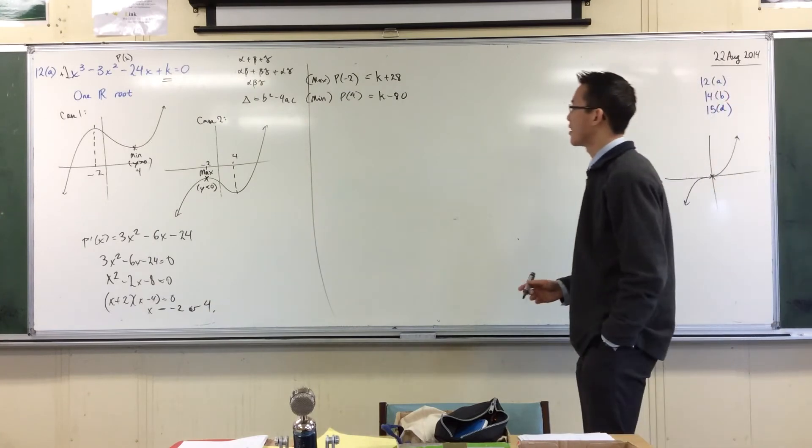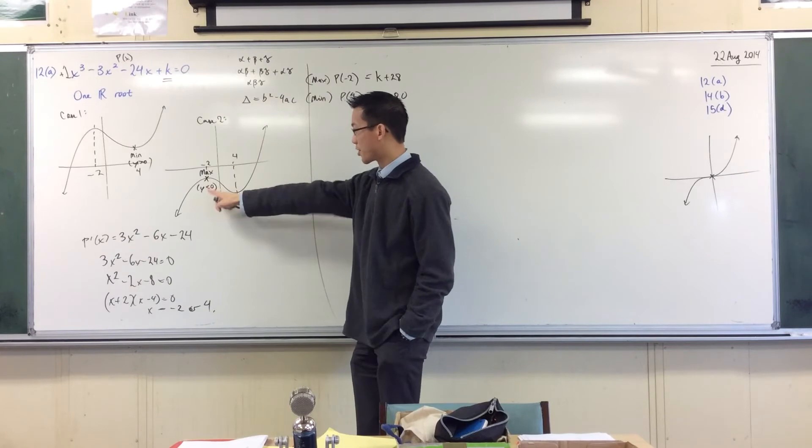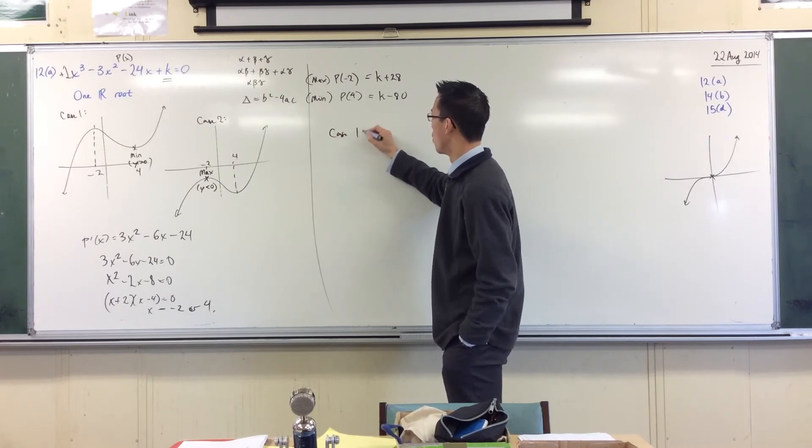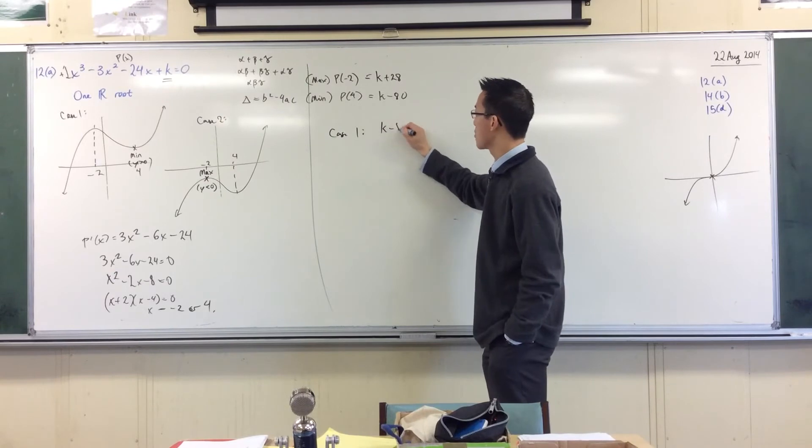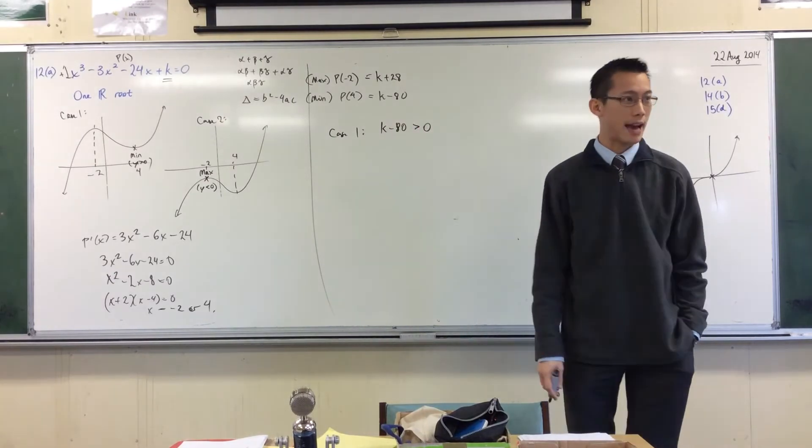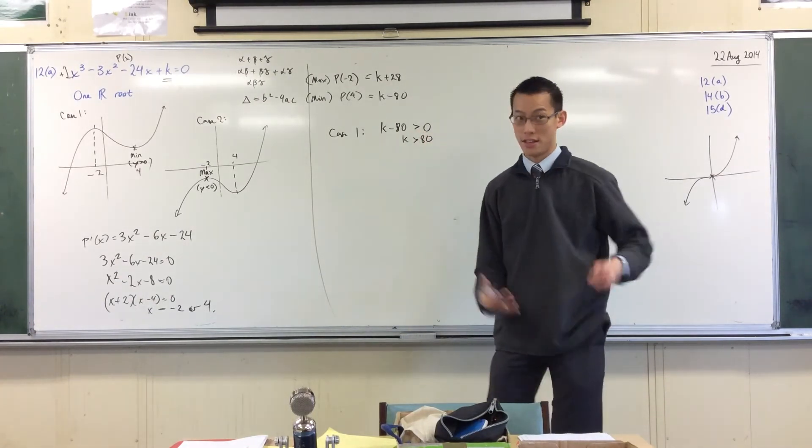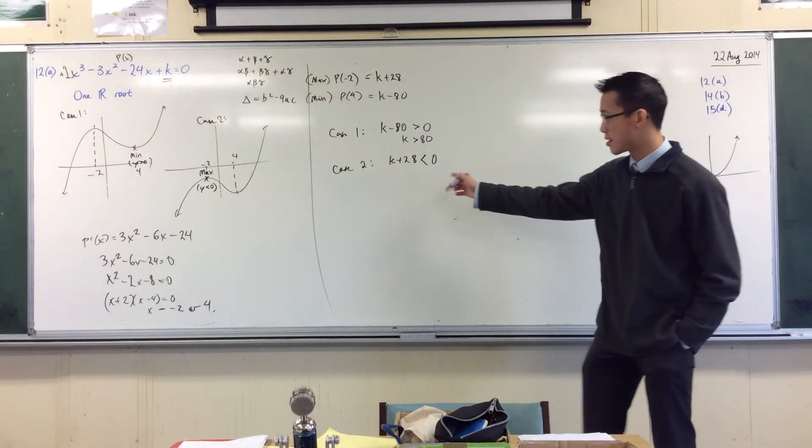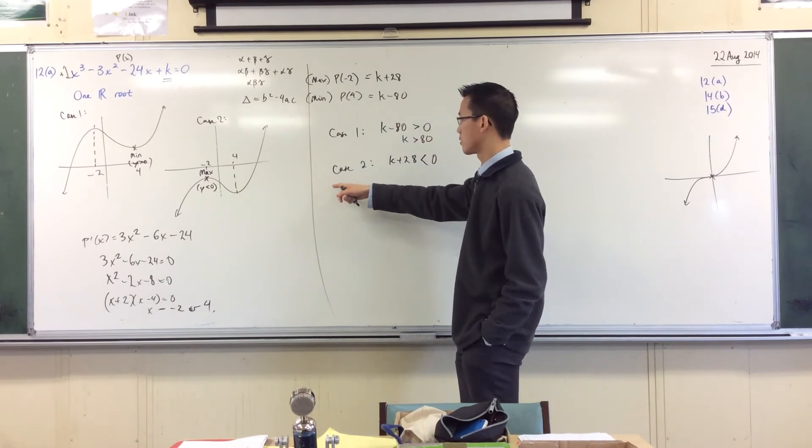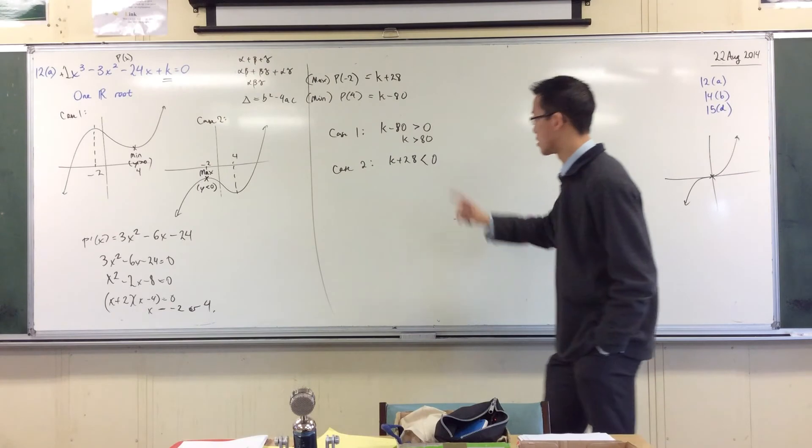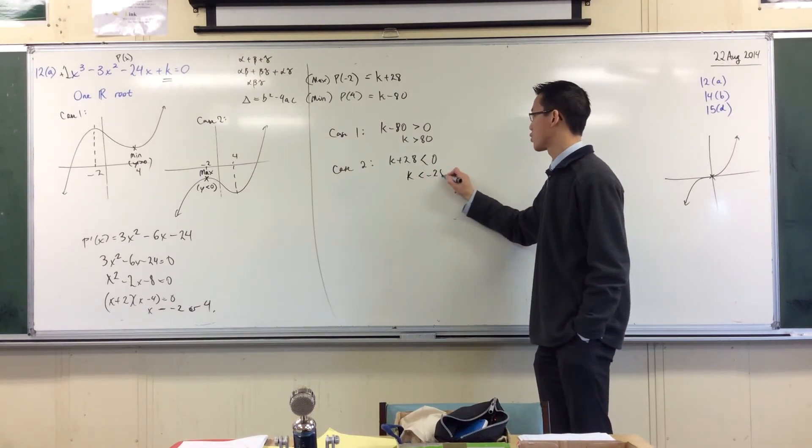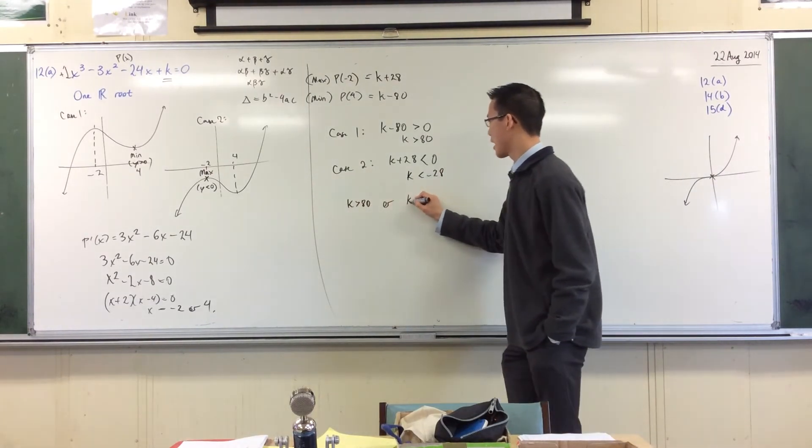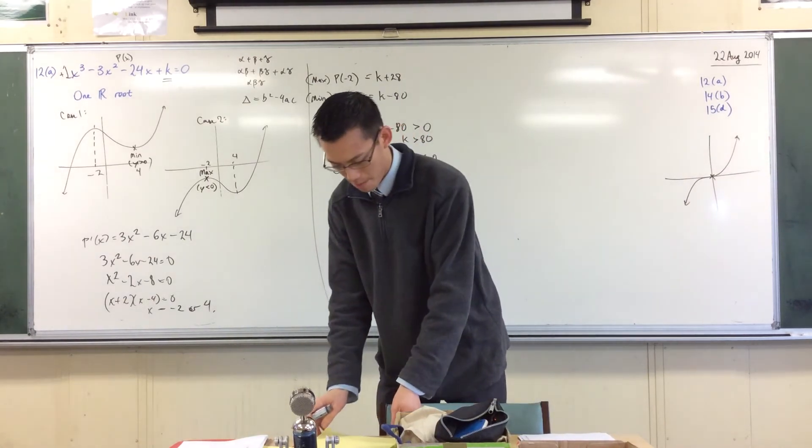So now what do I want? I want the maximum. Let's look at this case. This is case 2. I want the maximum to be below 0. Maybe I should have done it in order. Alright? Case 1. I want the minimum to be above. K minus 80 to be above the axis. From which you get k is greater than 80. And then you look at case 2, the one I started with. I want this one to be below the axis because this is the maximum. So, k is less than negative 28. There you go. These two values. So you've got k is greater than 80 or k is less than negative 28.